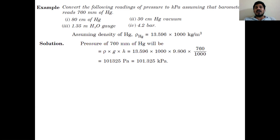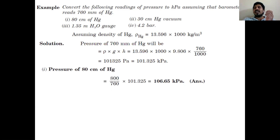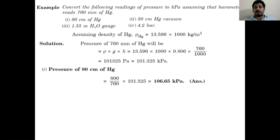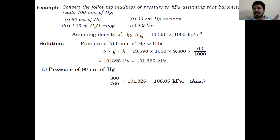For the first objective, 80 centimeters of Hg equals 800 mm. For 760 mm Hg we have 101.325 kilopascal, so for 800 mm: (800 ÷ 760) × 101.325 = 106.65 kilopascal. So for 80 centimeters or 800 mm of Hg the pressure is 106.65 kilopascal. Note: in objective one, 80 cm is more than atmospheric pressure (76 cm), so that pressure above atmospheric is called gauge pressure.